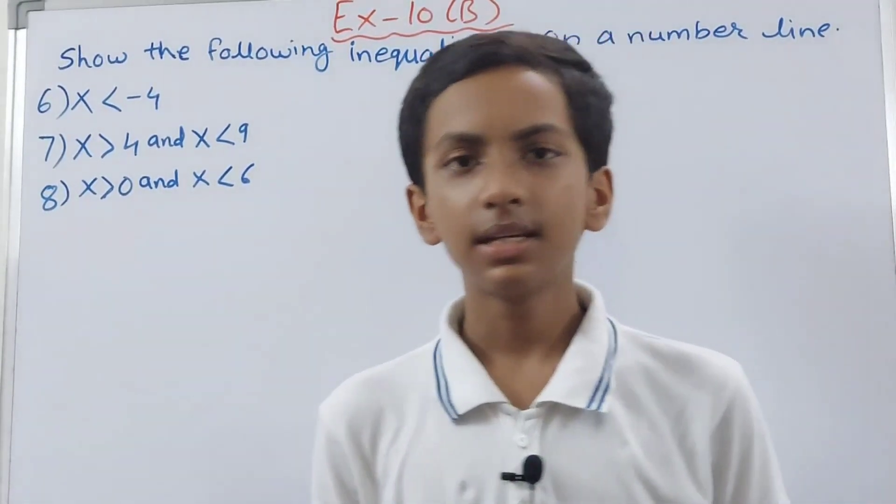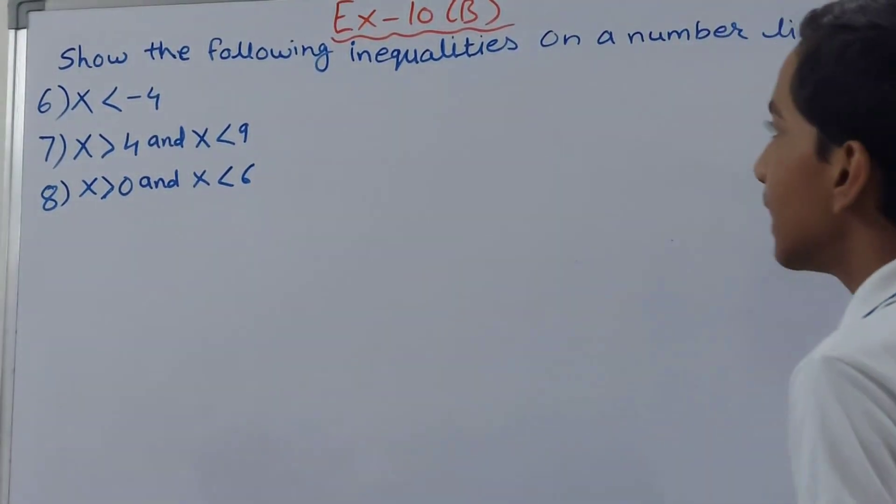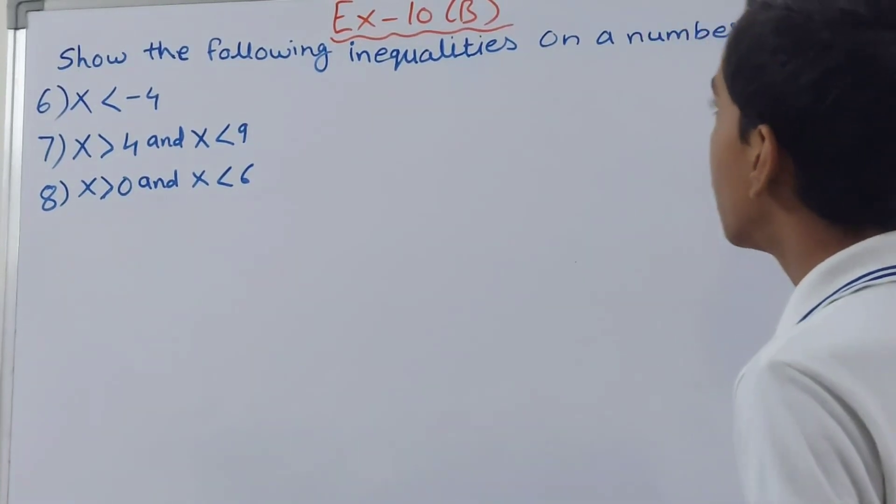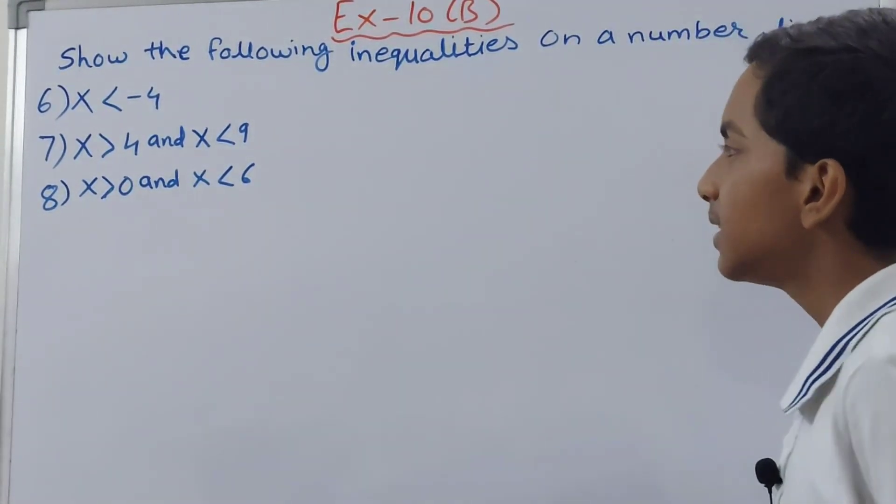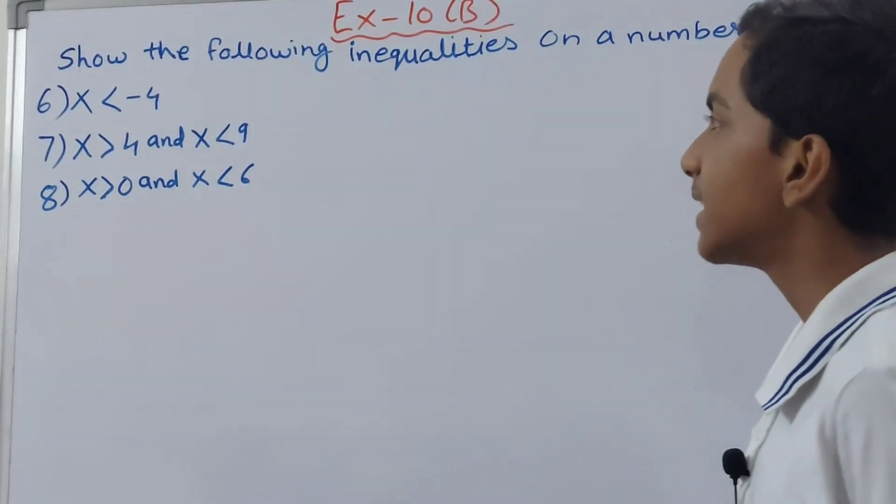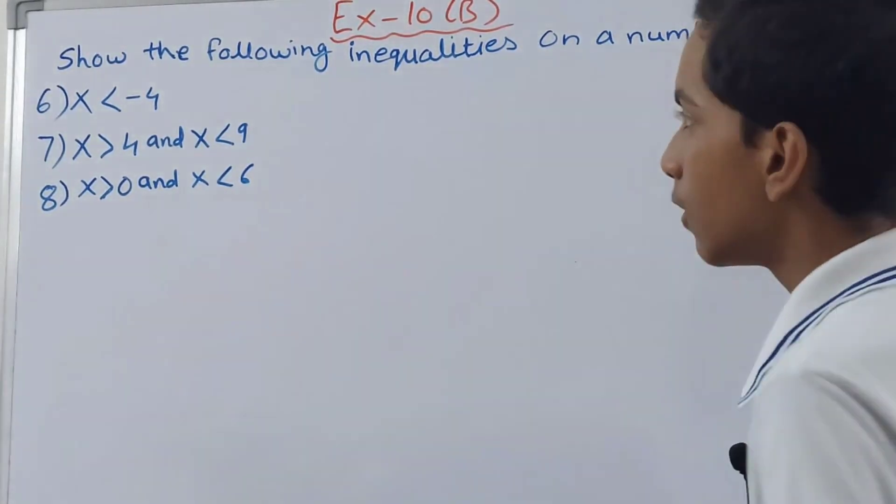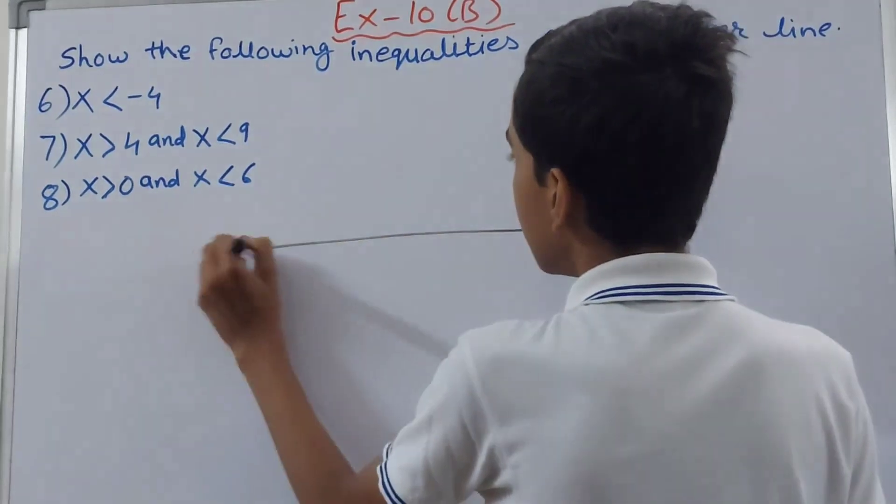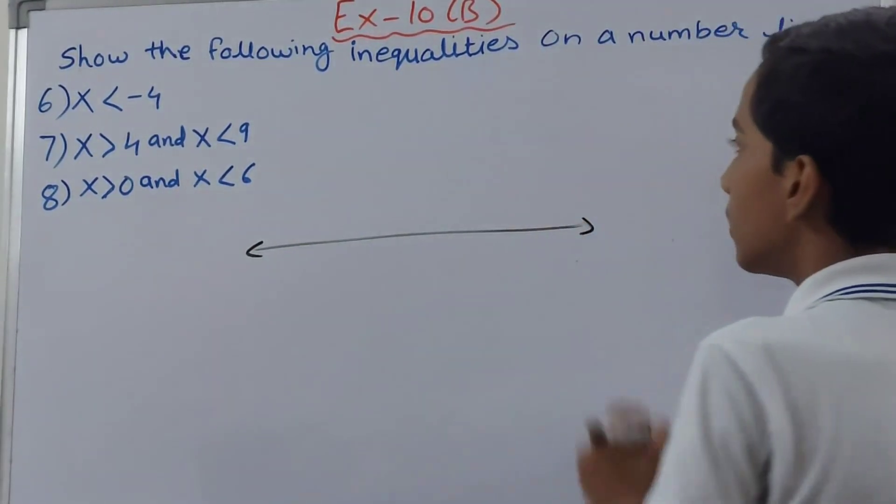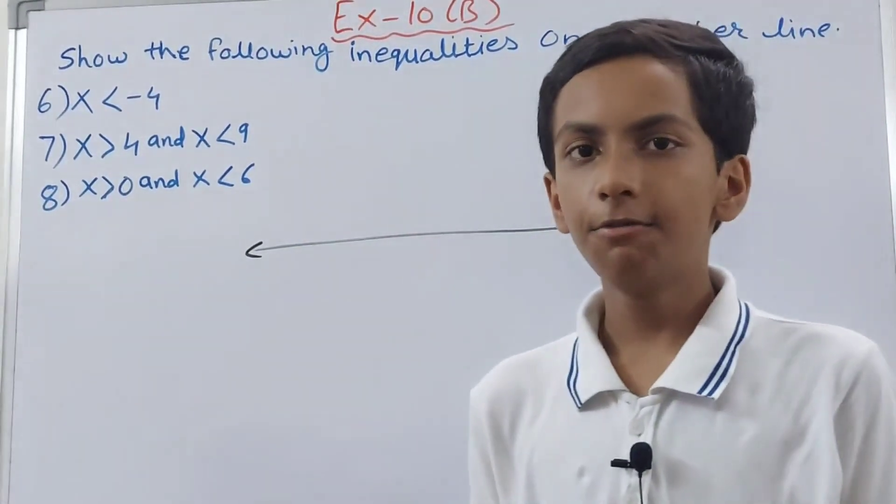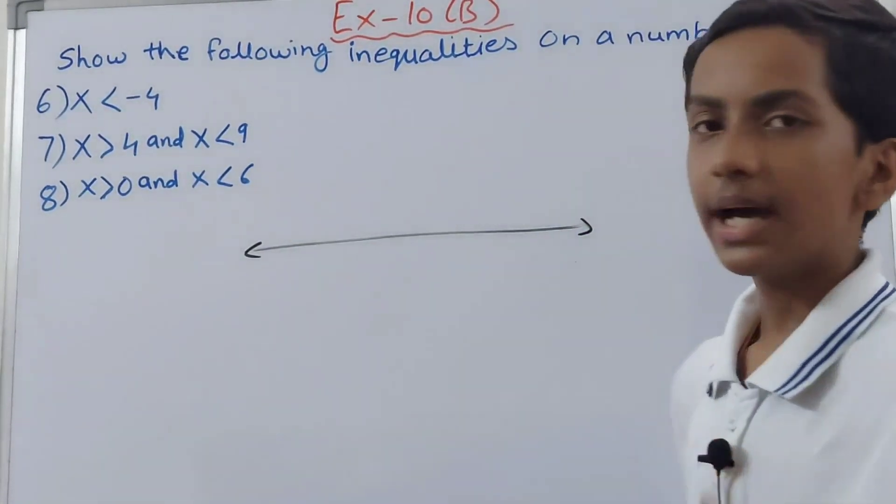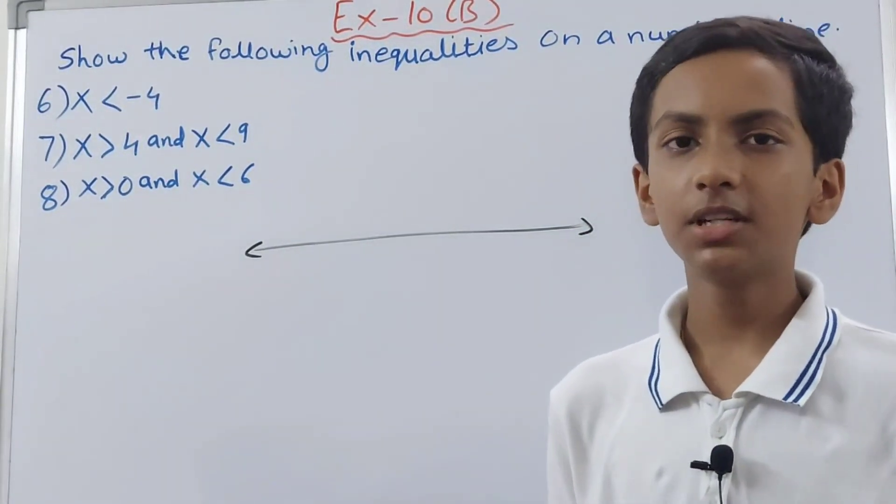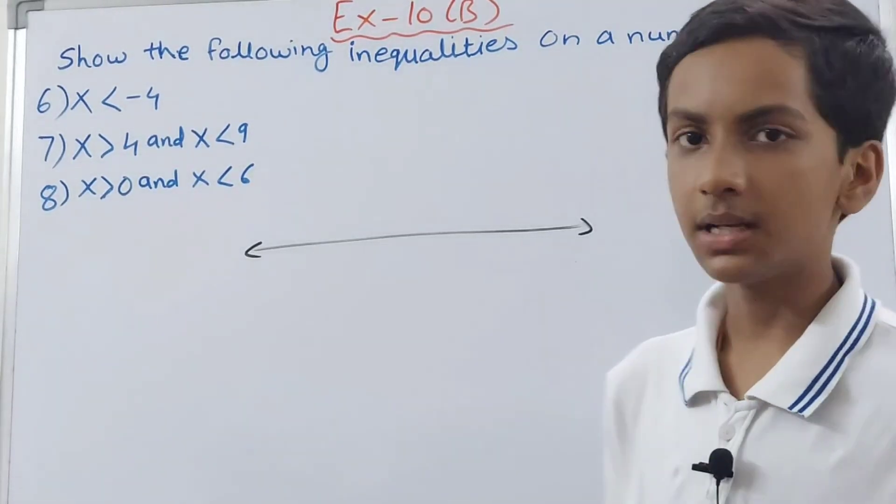This tells us the same question here: show the following inequalities on a number line. Now friends, here in the sixth inequality we have x is less than minus 4. So first of all we'll draw the number line, but before that we also have to mention which numbers we are taking here. So I told you that we always take real numbers whenever they have not specified.